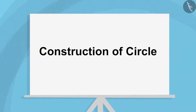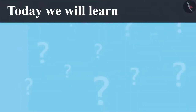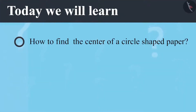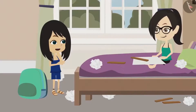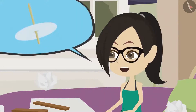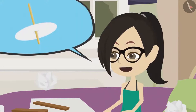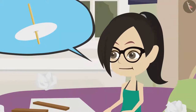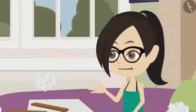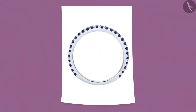Construction of Circle, Part 2. Today we will learn how to find the center of a circle shaped paper. What are you making? I am trying to make a spinning top with paper and a stick. I had read that to make a spinning top you can cut a paper in the shape of a circle, then put a stick right through its center and then spin it. The problem I am facing is that I am using a bangle to cut a paper circle. But how do I find the center of this circle?